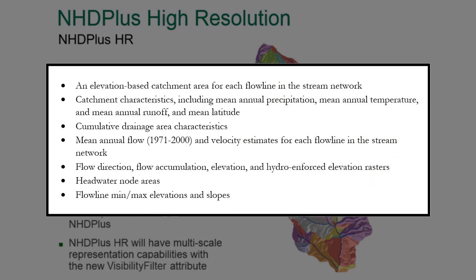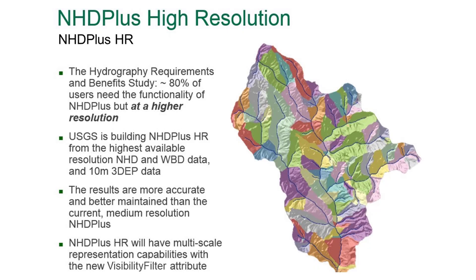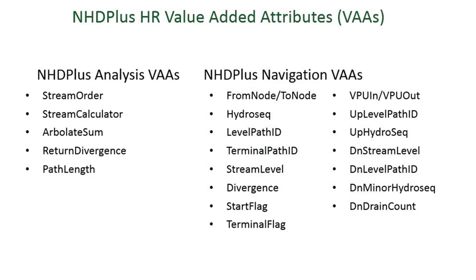An elevation-based catchment area for each flowline in the stream network. Catchment characteristics including mean annual precipitation, mean annual temperature, mean annual runoff, and mean latitude. Cumulative drainage area characteristics, mean annual flow and velocity estimates for each flowline in the stream network. Flow direction, flow accumulation, elevation, and hydro-enforced elevation rasters. Headwater node areas. Flowline minimum and maximum elevations and slopes. In addition, a set of value-added attributes are included that enhance stream network navigation, analysis, and display.